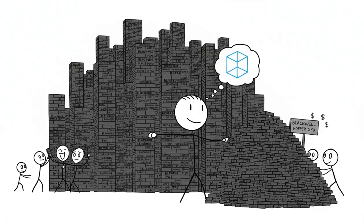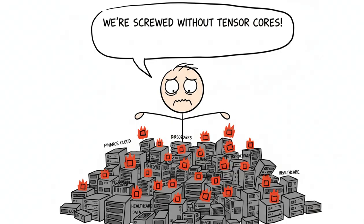The demand for their Blackwell and Hopper GPUs is so astronomical, it's like the entire world decided to build the Matrix, and they're the only ones selling the bricks. This isn't just about big tech. It's about every industry, from finance to healthcare, realizing they're screwed without a massive stockpile of tensor cores.